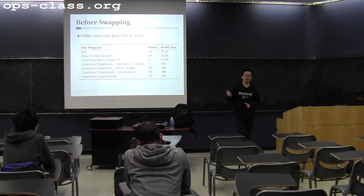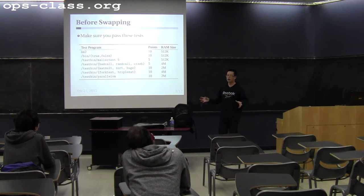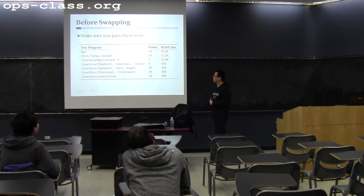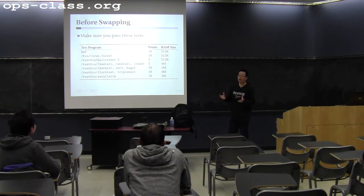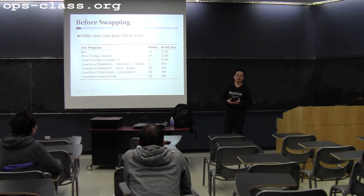The parallel VM test may be tricky because you only have 2 megabytes of memory and need to spawn around 20 threads. If your thread structure is not efficient, you may not be able to run parallel VM with 2 megabytes. Try to strip down unnecessary data structures, like an oversized file table. If you really cannot run parallel VM with 2 megabytes, try enlarging to 4 megabytes and make sure it runs multiple times. Then move on to swapping — with swapping, this problem will go away because you can always swap pages when memory runs out.